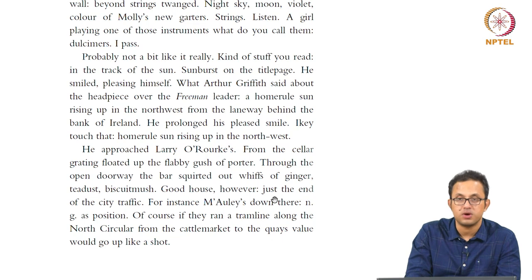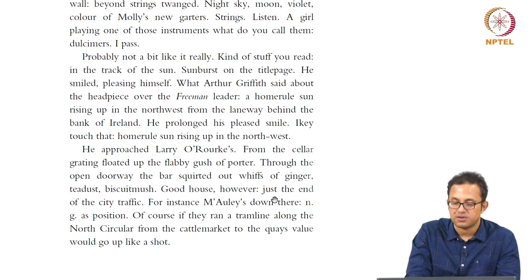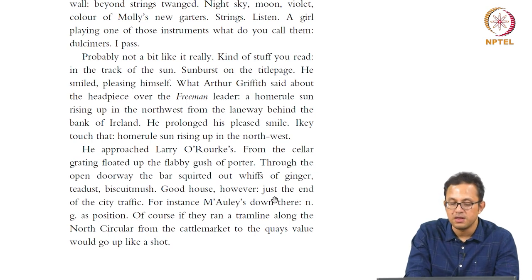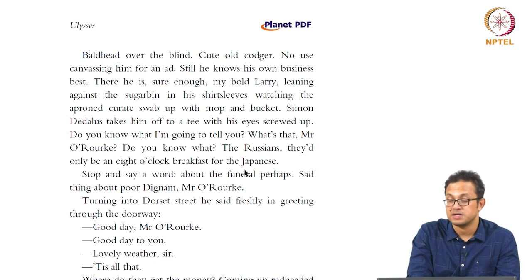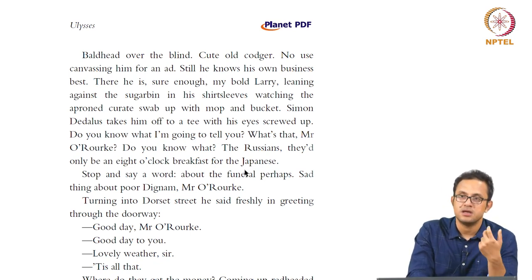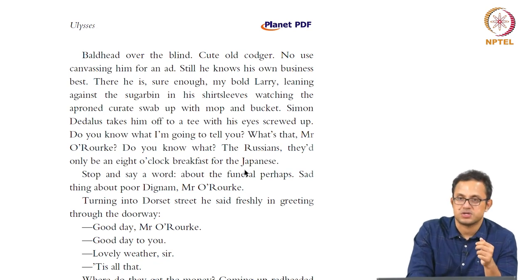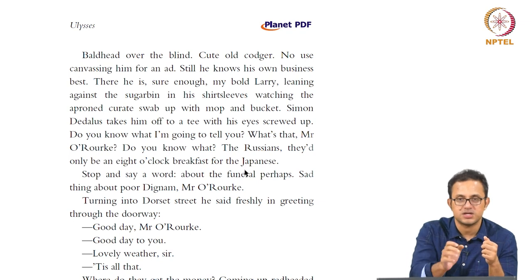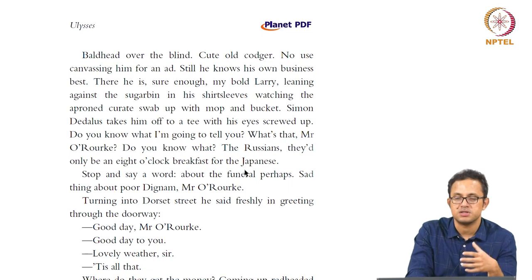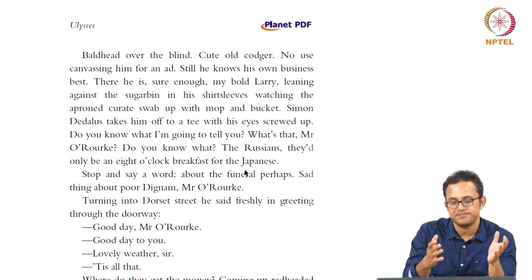Then we have a cinematic description of his walk down Dublin. He approaches Larry O'Rourke's: 'from the cellar grating floated up the flabby gush of porter. Through the open doorway the bar squirted out whiffs of ginger, teadust, biscuit mush.' He muses about property values and tram lines. Again there is a very interesting description of Dublin — little shops, real estate prices, the gritty, murky, materialist realism where property prices and tram lines are put together with this very abstract stream of consciousness. The spiritual and the material, the vulgar and the banal, all come together in interesting combinations that are not easy to demarcate anymore.